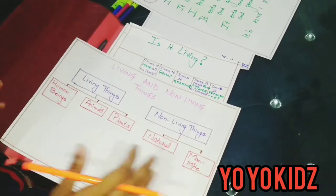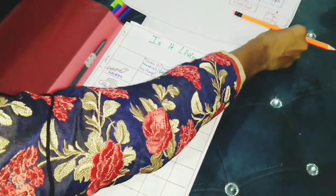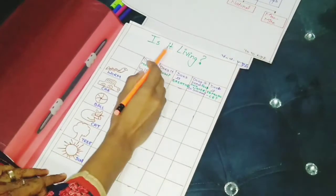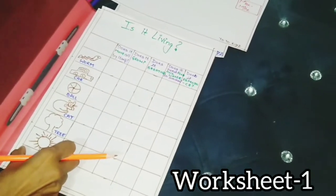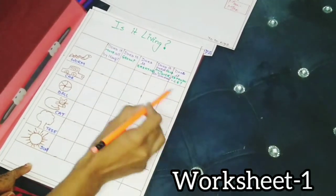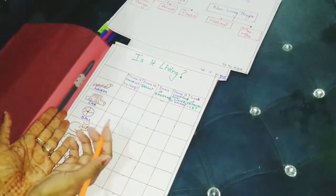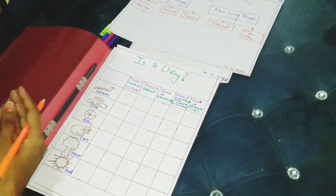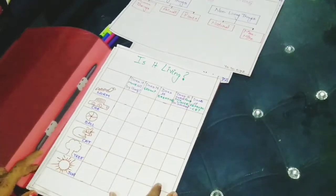Now I hope the concept is clear to all of you. Now let's do a worksheet. Is it living? Here I have drawn some things. According to that, you have to ask these questions. If the question's answer is yes, it means it is living. If the question's answer is no, it means it is non-living. So let's check it.